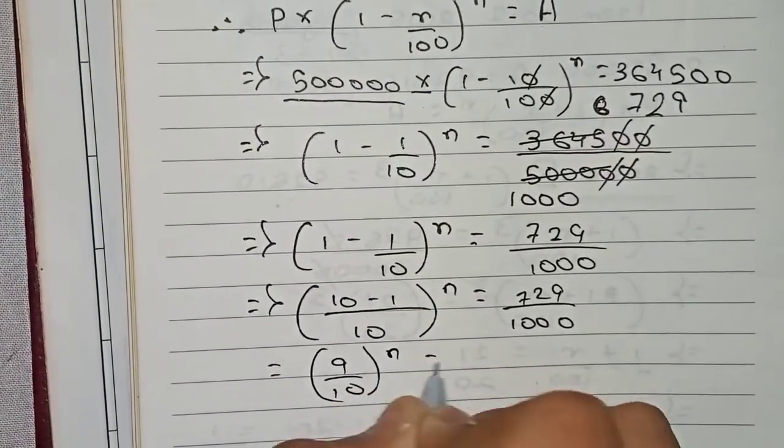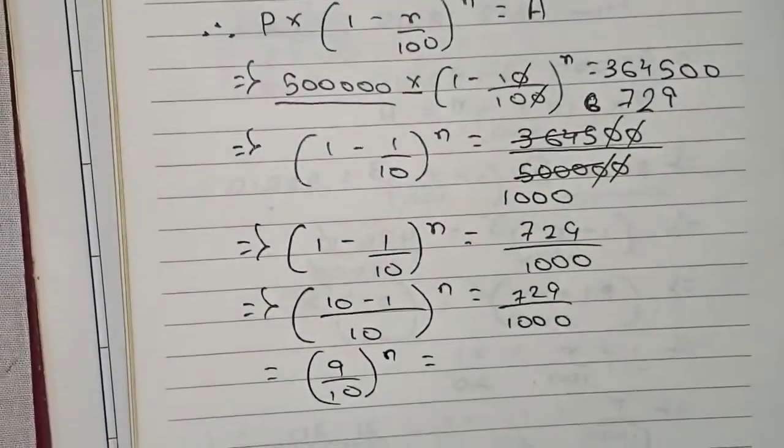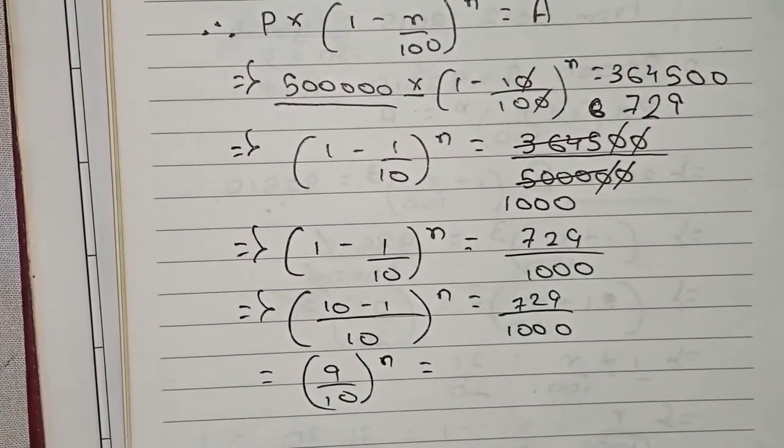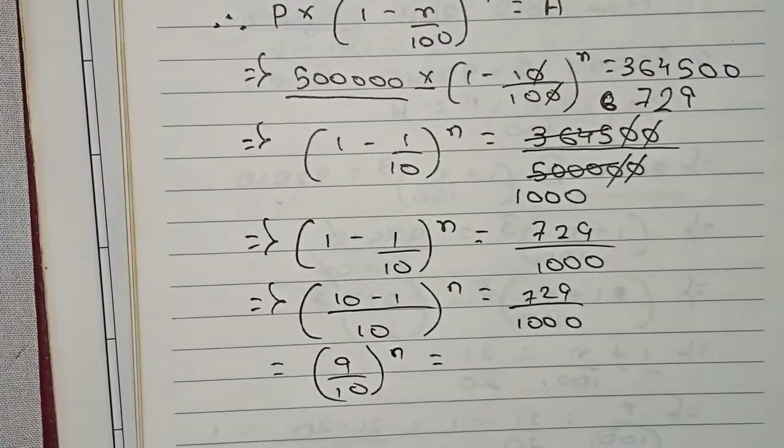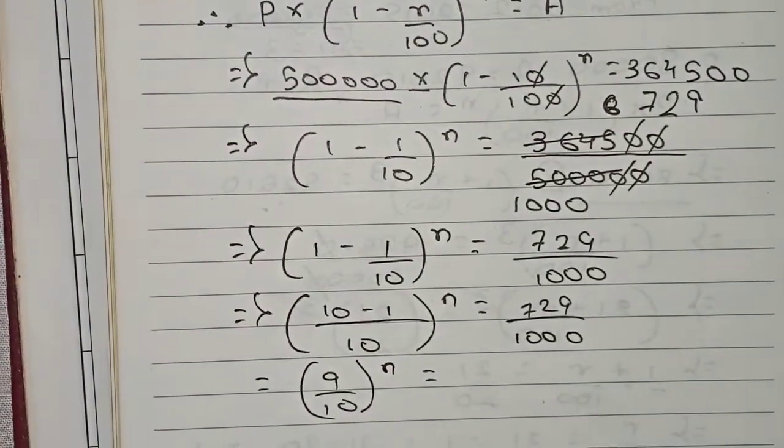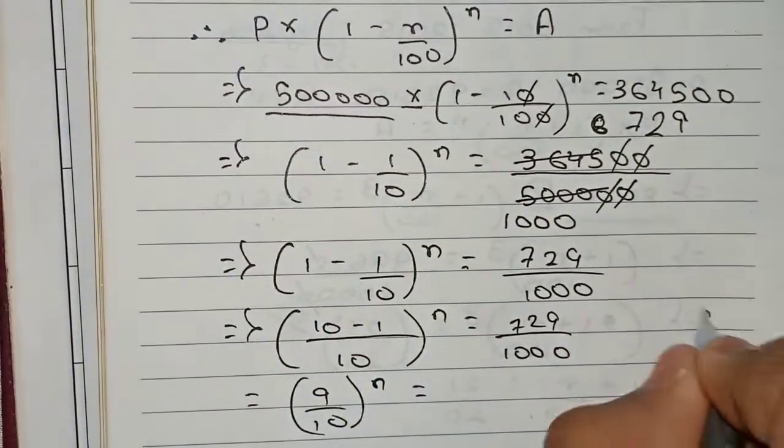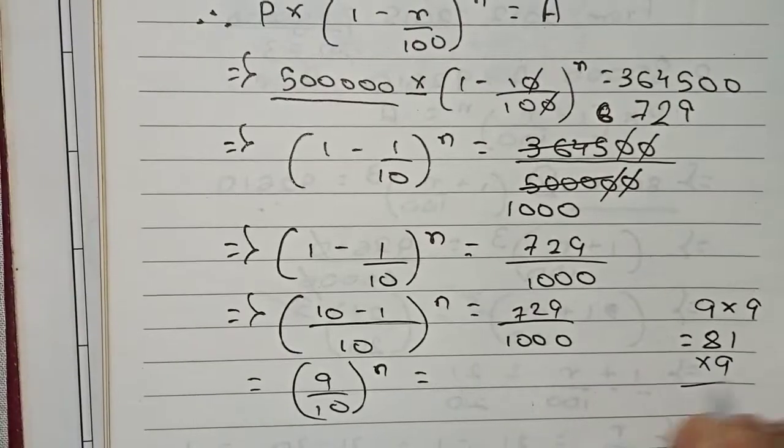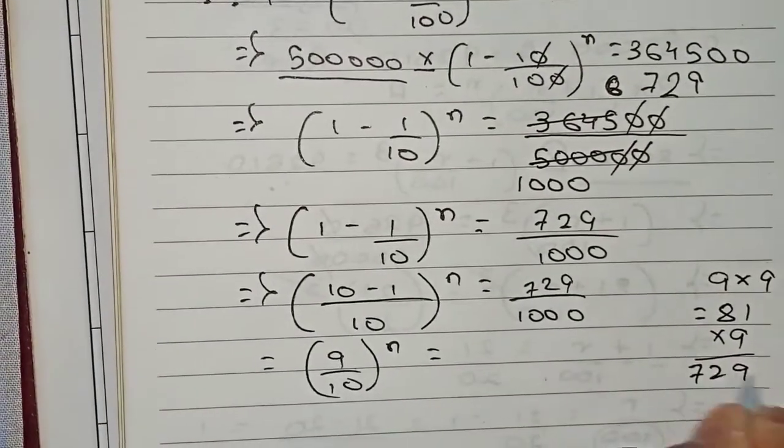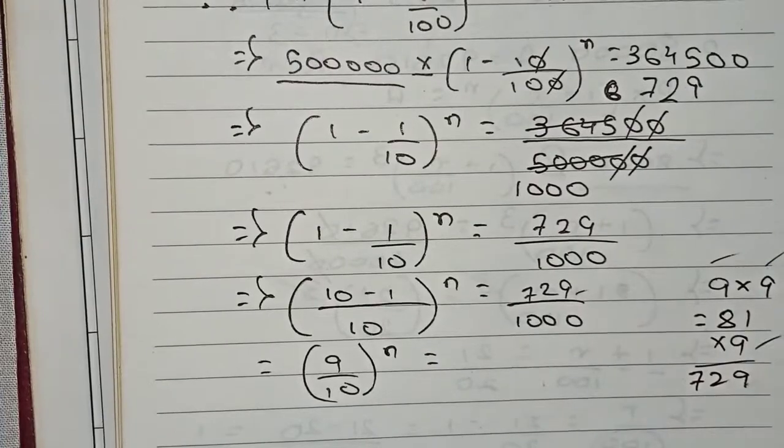Now we have to think of such a number where 9 to some power equals 729. That means we multiply 9 until we get this number. 9 times 9 is 81, and 81 times 9 is 729. So we got this number: one time 9, two times 9, and three times 9. That means 9 to the power 3 equals this number.